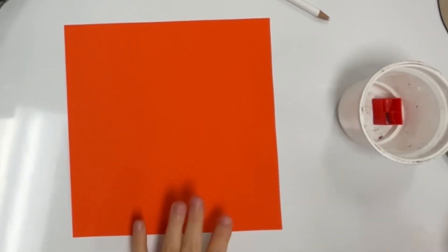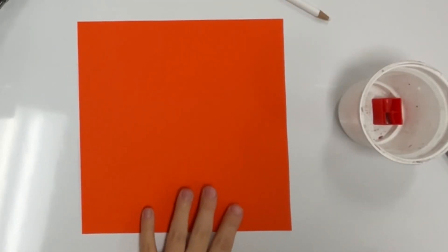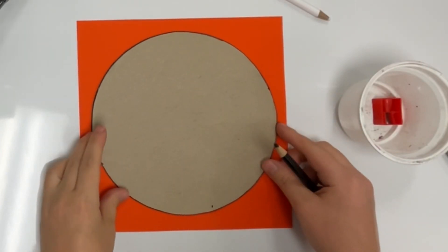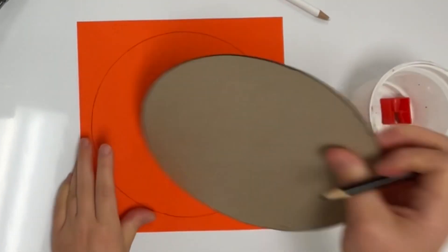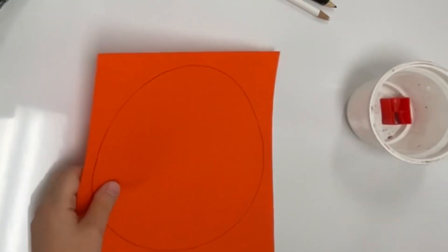Today I'm creating a radial design that will be part of a collaborative mural. I'm going to trace a circle onto my piece of paper and then I will cut the circle out.